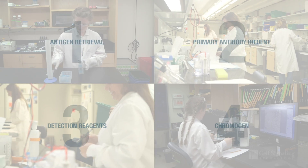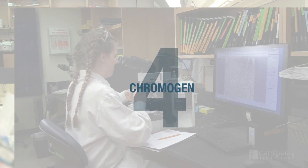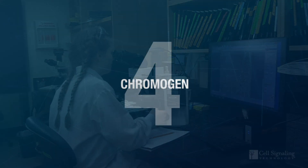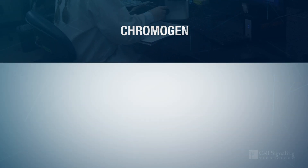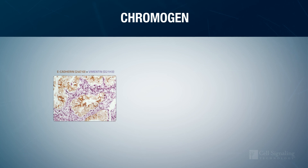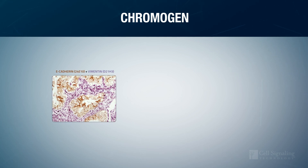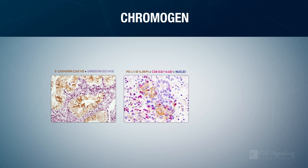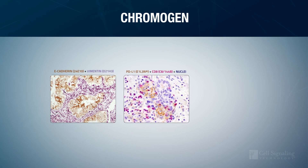Step 4: Chromagen. Chromagens are substrates that interact with the HRP bound to the detection reagent, depositing colored staining that can be seen with light microscopy.